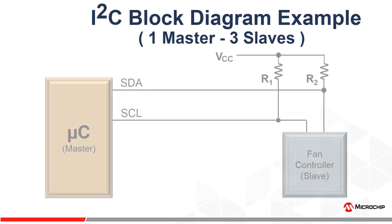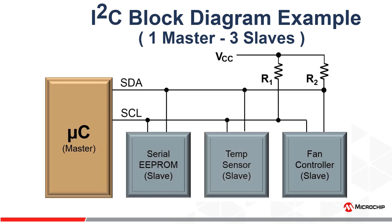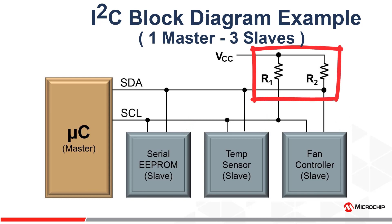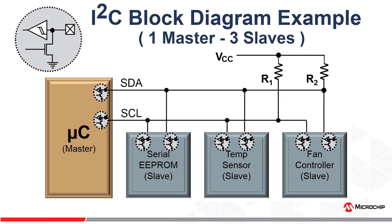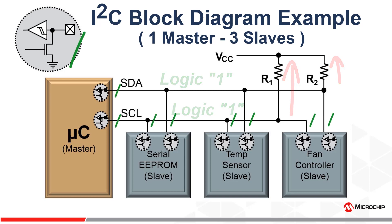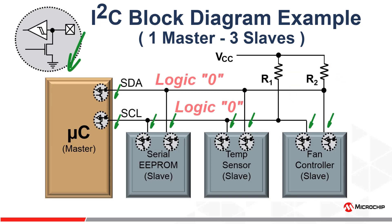Here's an example of four devices connected to the same I2C bus. The microcontroller is the bus master, and the three slaves are a serial EEPROM, a digital temp sensor, and a fan controller. R1 and R2 are the pull-up resistors, which are required for I2C devices to communicate properly. This is because I2C protocol works on the premise that the SCL and SDA bus lines are open drain or open collector. The transmitting device just lets go of the I2C bus to create a logic 1, and pulls or drives the line to ground to create a logic 0.